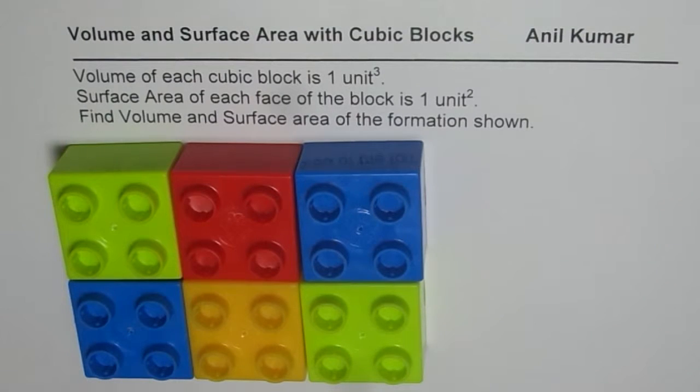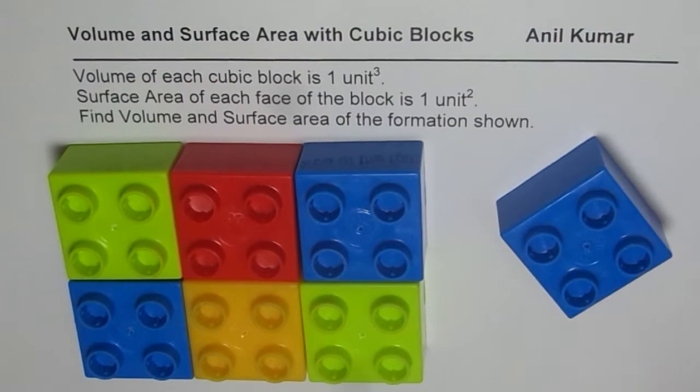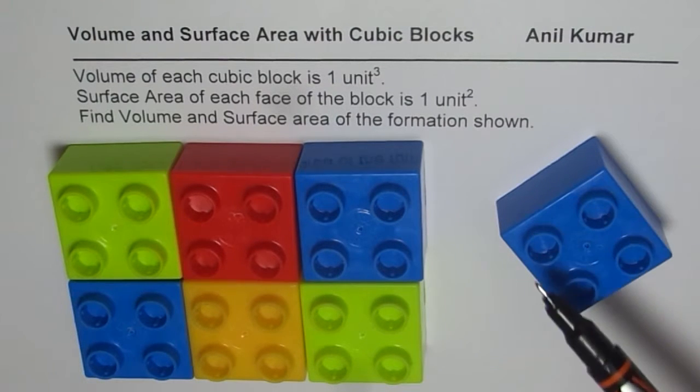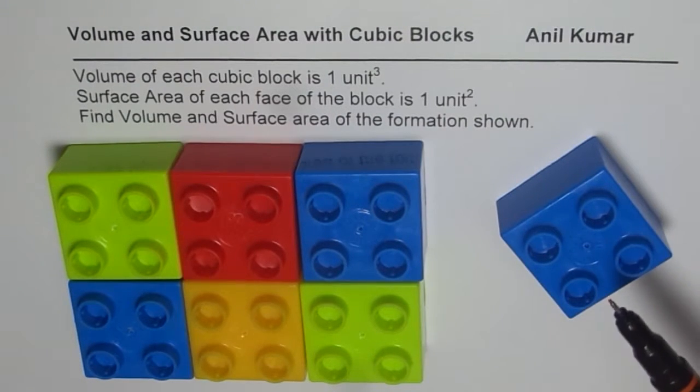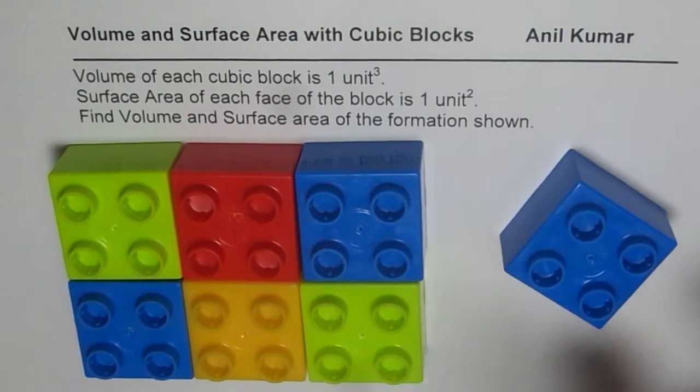A block may have 6 surfaces. So a block can have 6 surfaces. Imagine this is all plain. So 6 surfaces. So total surface area of the whole block, the cubic block, will be 6 unit square and volume of each block is 1 unit cube.